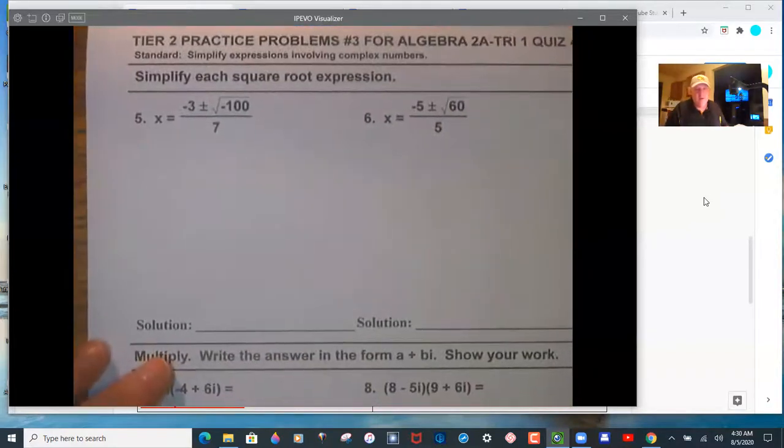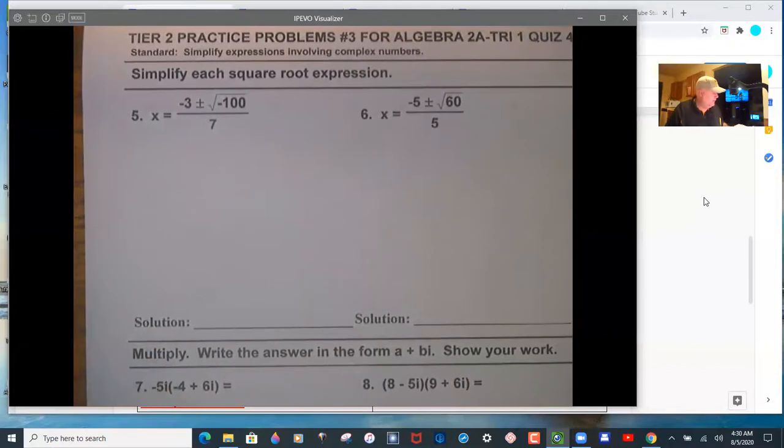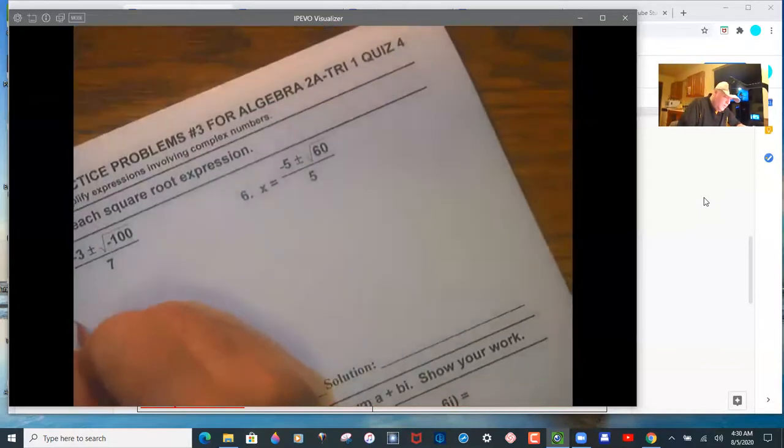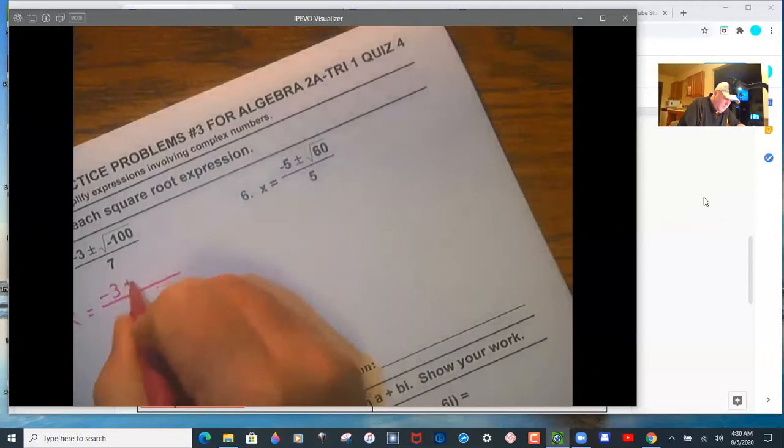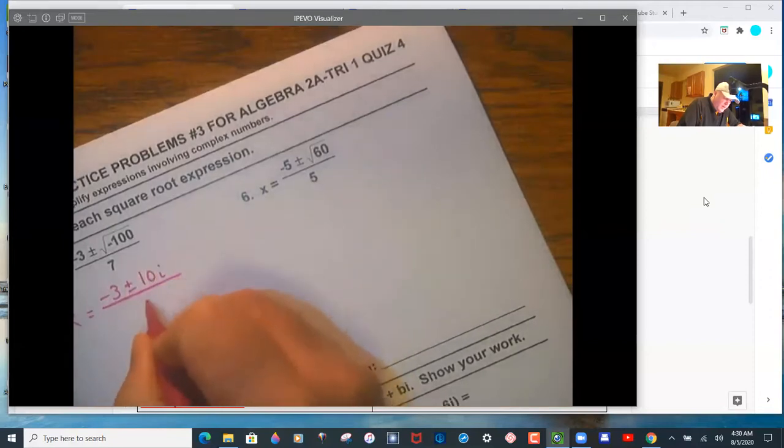Okay, so here, again, pay attention to the negative under the square root. The 100 reduces perfectly. So we're going to have negative 3 plus and minus 10i over 7.